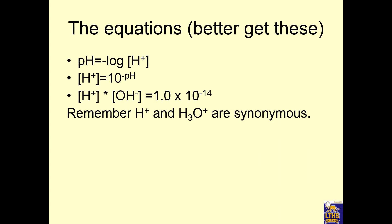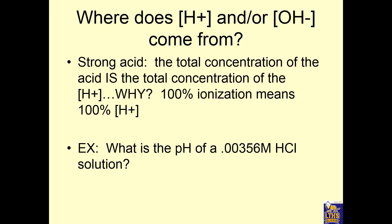We have to know how to use these calculations to figure out stuff about acids and bases and pH. For strong acids, the total concentration of the acid is the total concentration of the hydrogen ion, because all of the acid ionizes — it becomes 100% hydrogen ion. So the question here is: what is the pH of 0.00356 molar HCl?